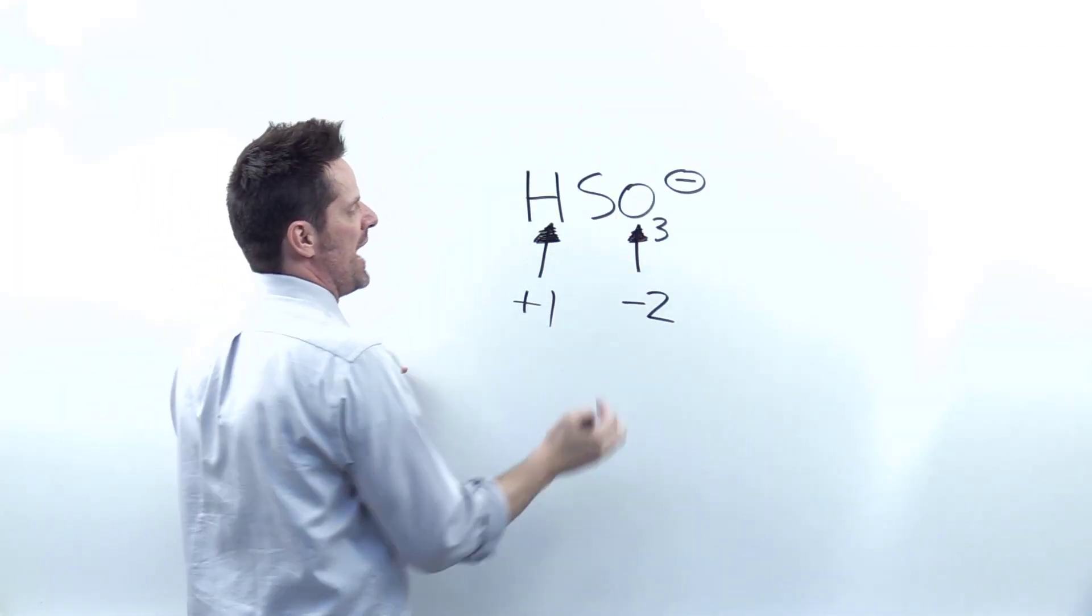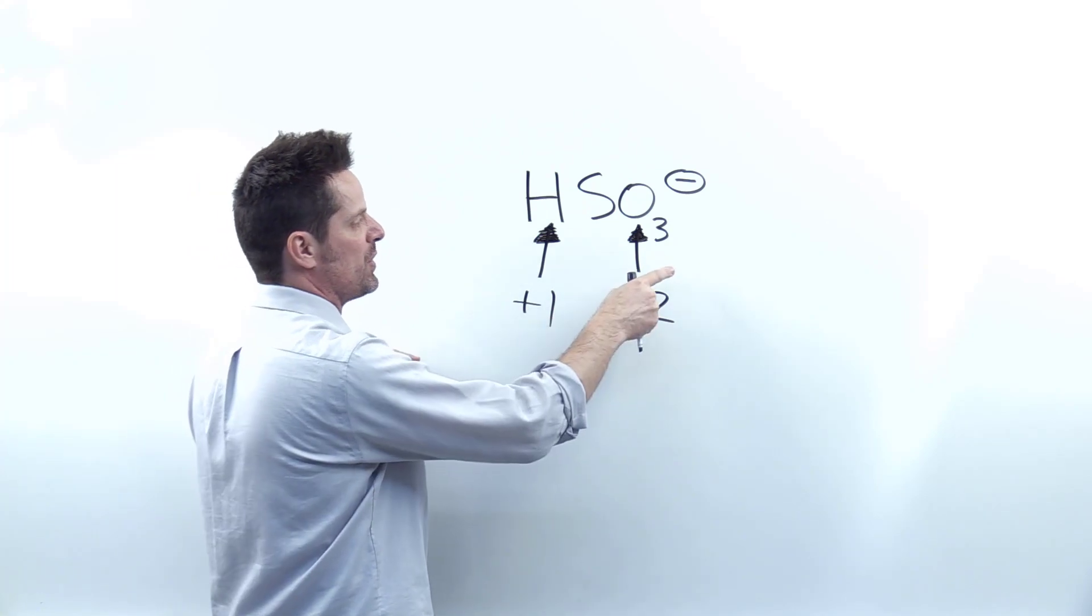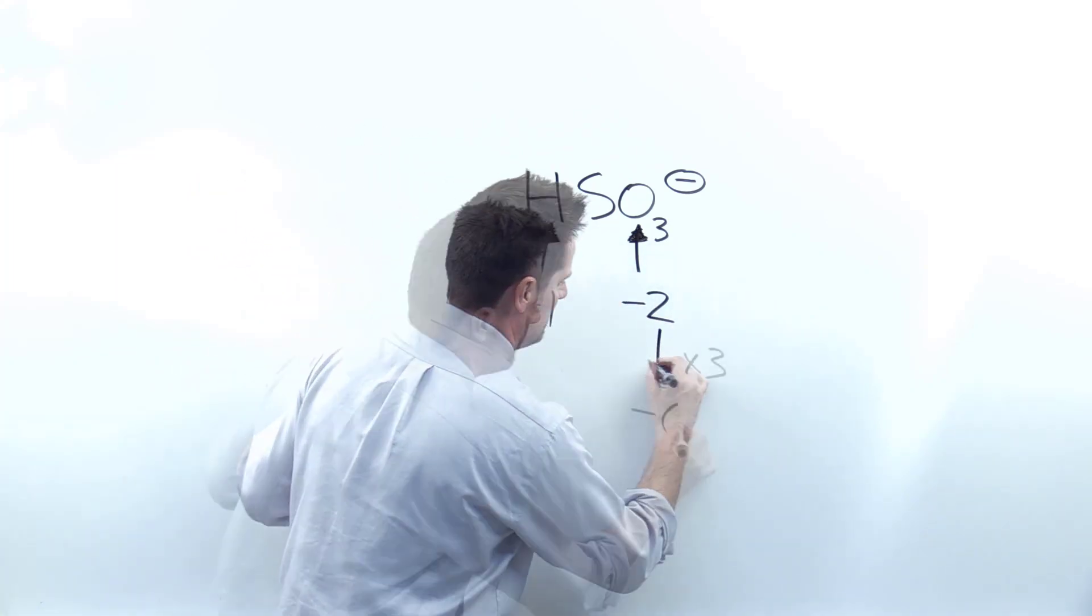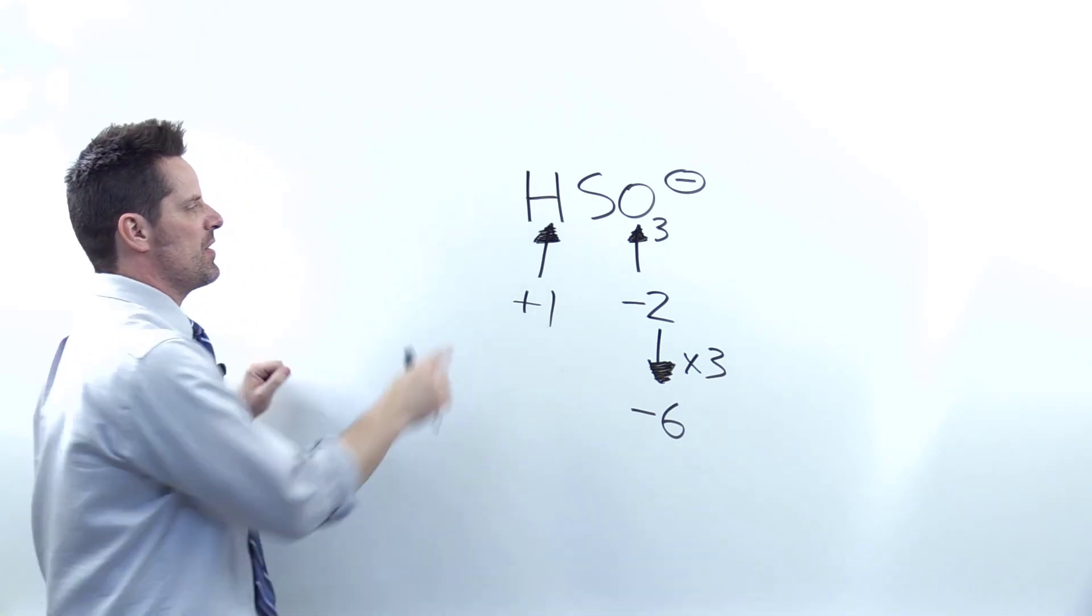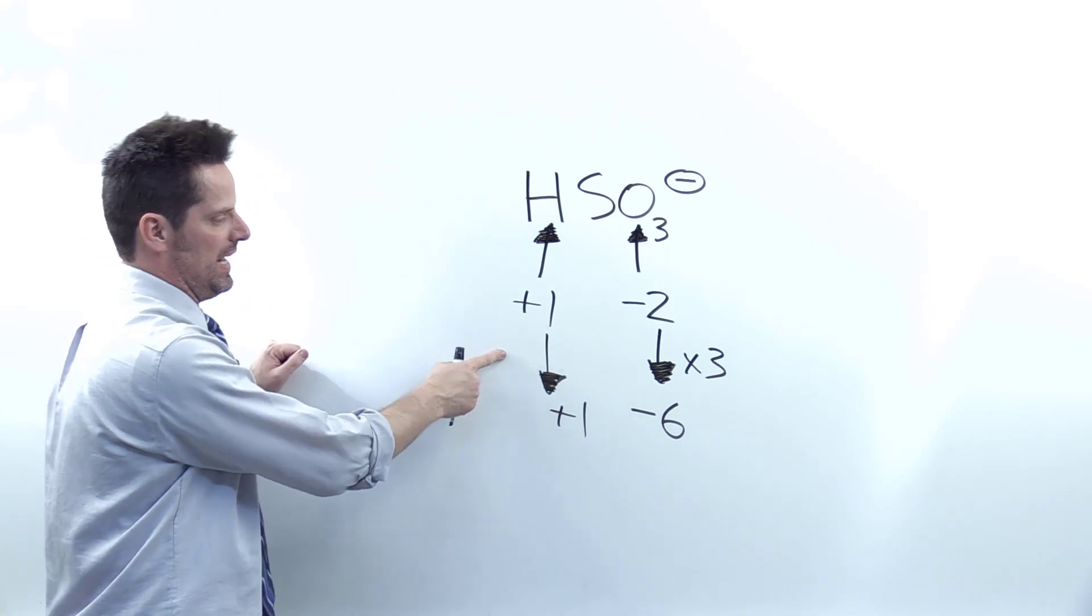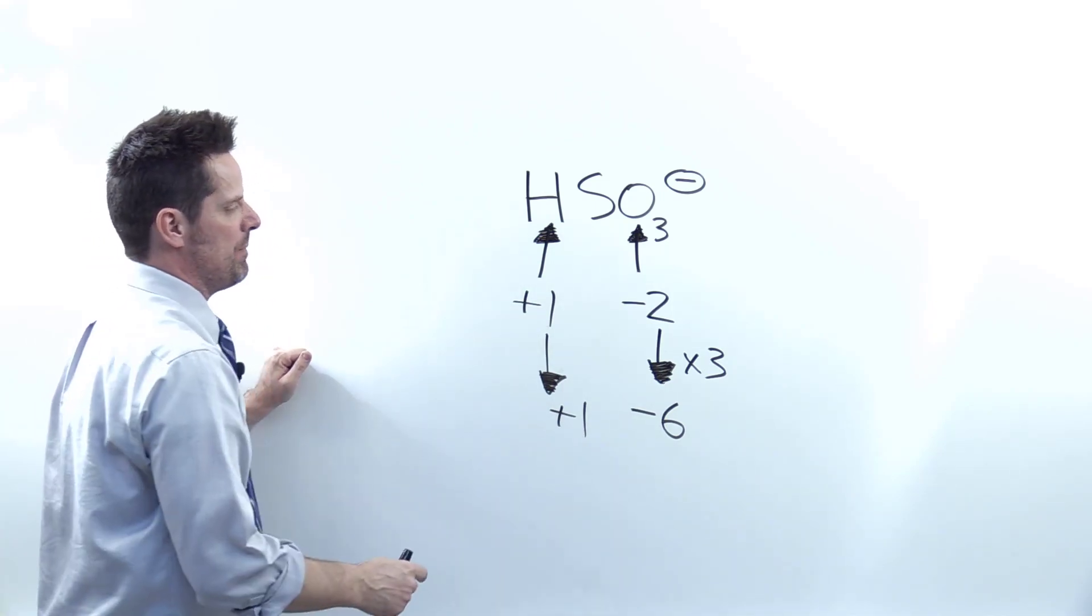So we have to combine all of these here. In this case, we've got three oxygen atoms. So the total charge ebbing off of all three of those is negative two per oxygen times three, which comes to negative six. Now there's only one hydrogen atom here so I can multiply its oxidation number by one and just get the exact same outcome one.